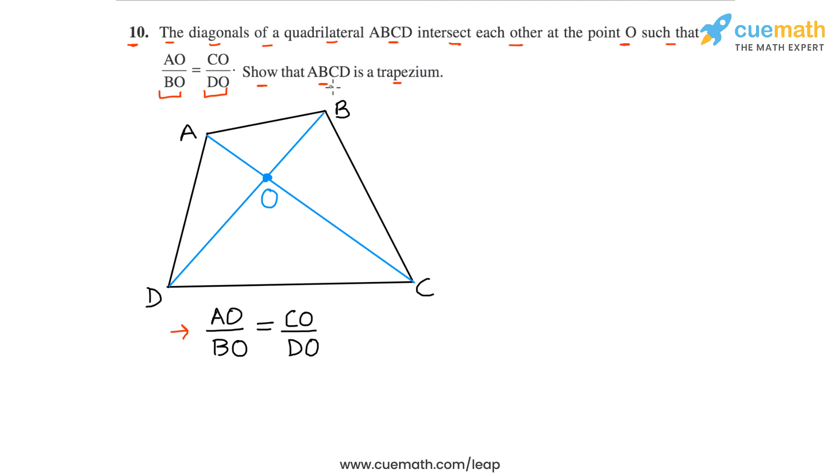In that problem we were given that ABCD is a trapezium with AB parallel to DC and we had to prove this equality of ratios, that AO by BO equal to CO by DO.